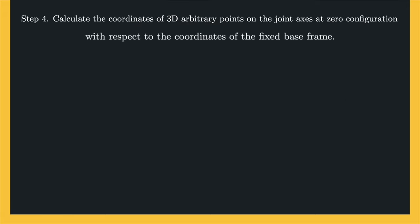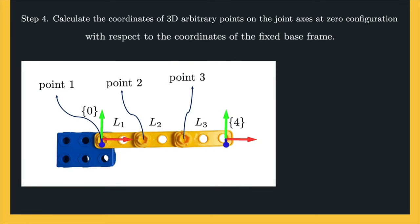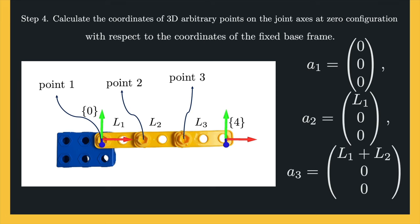Step 4 is to calculate the coordinates of 3D arbitrary points on the joint axes at zero configuration with respect to the fixed base frame. For our 3DOF planar open chain robot, we go back to the figure of the robot in the zero position. We can take three arbitrary points on the joint axes as depicted. The first point is at the origin of the base frame, so its coordinates are all zero. The second point is at L1 units along the x-axis, and the third point is at L1 plus L2 units from the x-axis of the base frame.